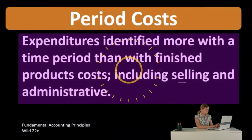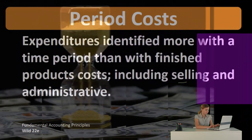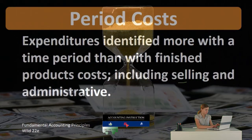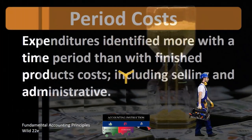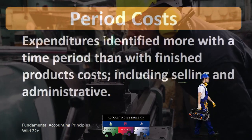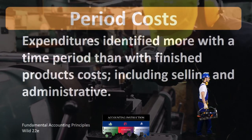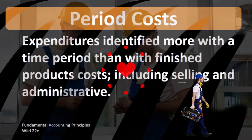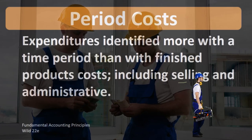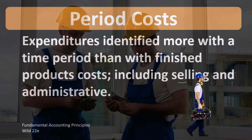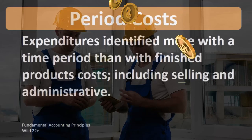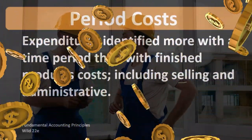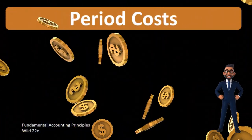We're basically breaking out the period costs of selling and administrative from the costs related to inventory, particularly in a manufacturing company. Period costs are usually going to be in a multi-step income statement, where we will have the costs related to the cost of goods sold, and then all other costs, including selling and administrative, broken out into a different section.